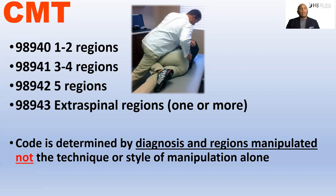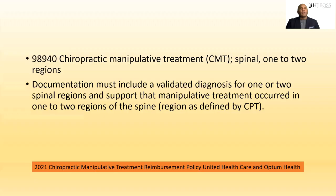The basic premise is: the code to use requires a diagnosis and the regions manipulated. The one difference for extra spinal is it doesn't have coding for more areas — it's one or more. So if you diagnose multiple areas of extra spinal, it is still just the one unit.